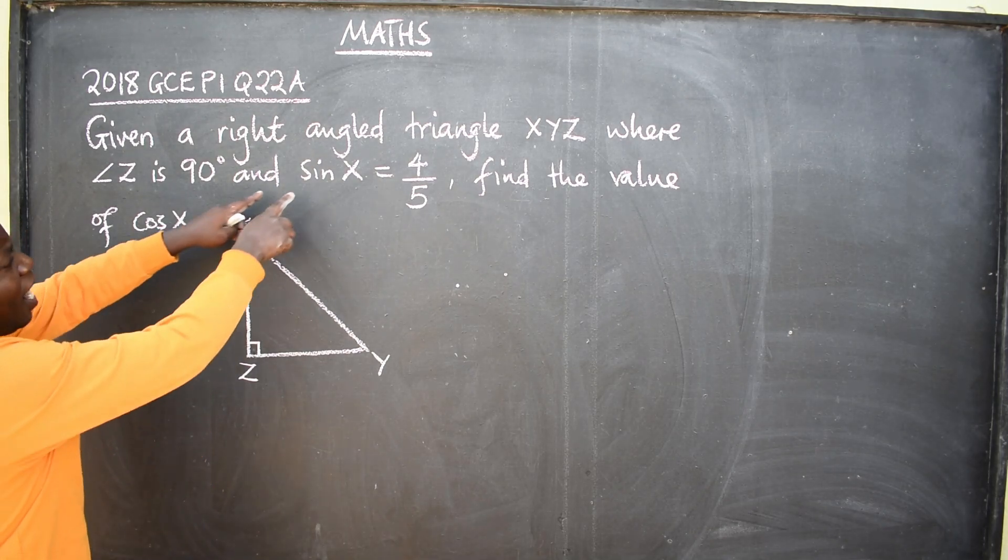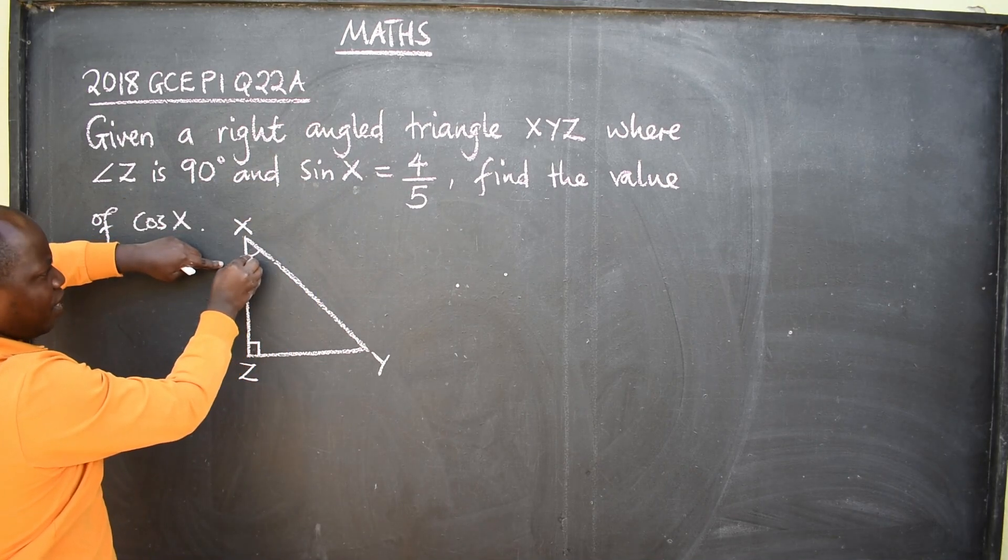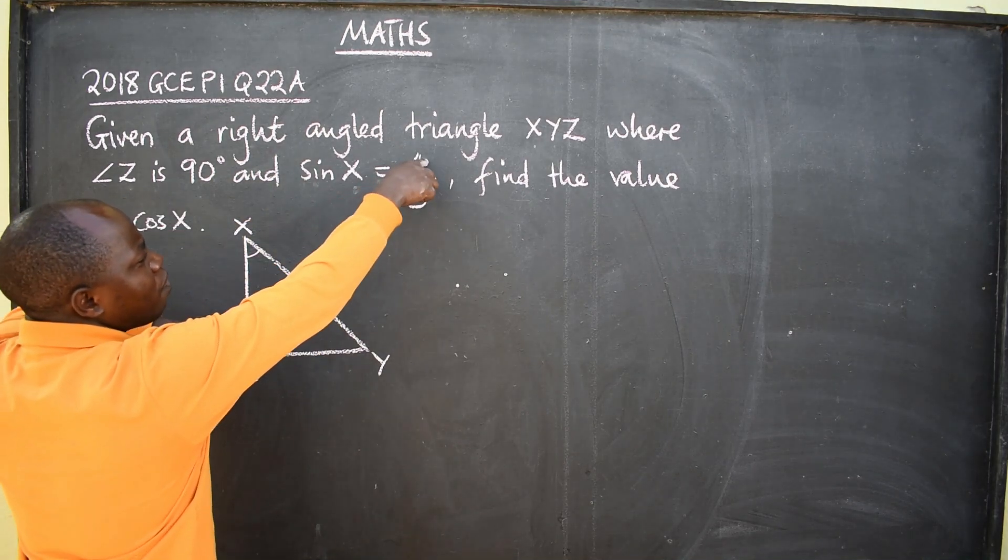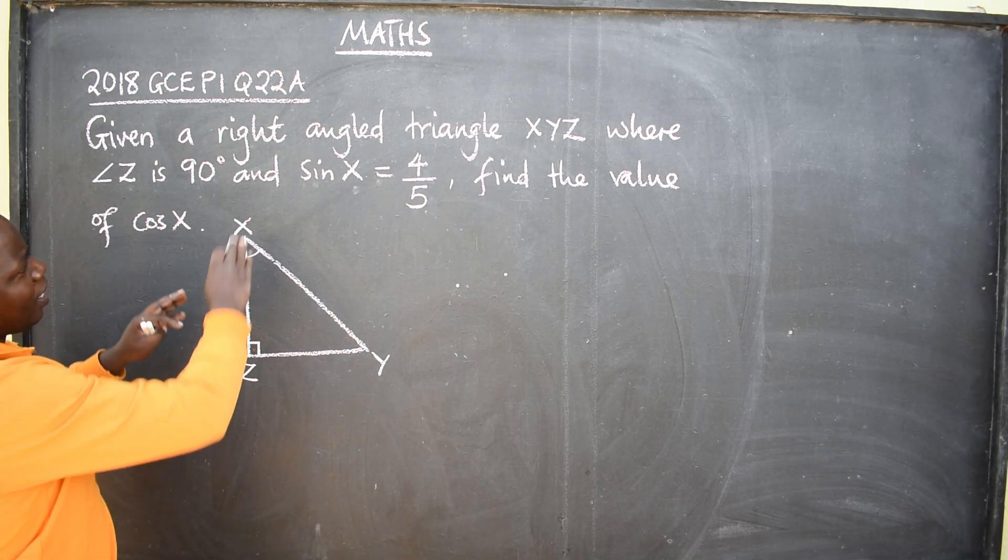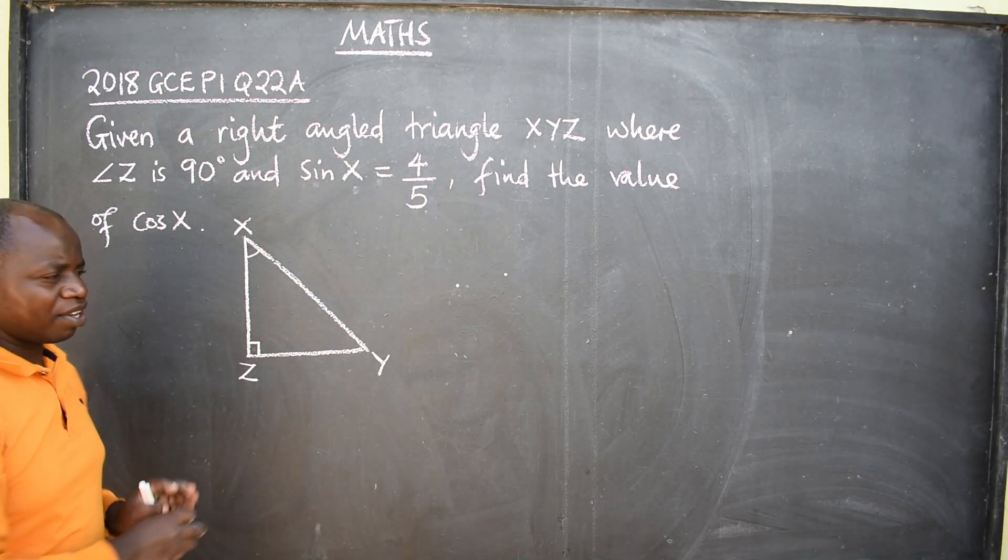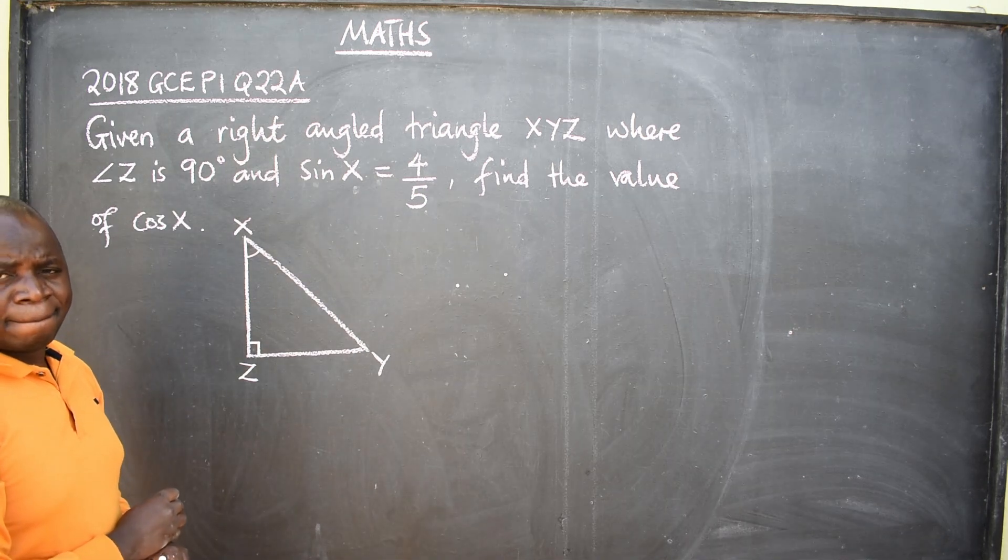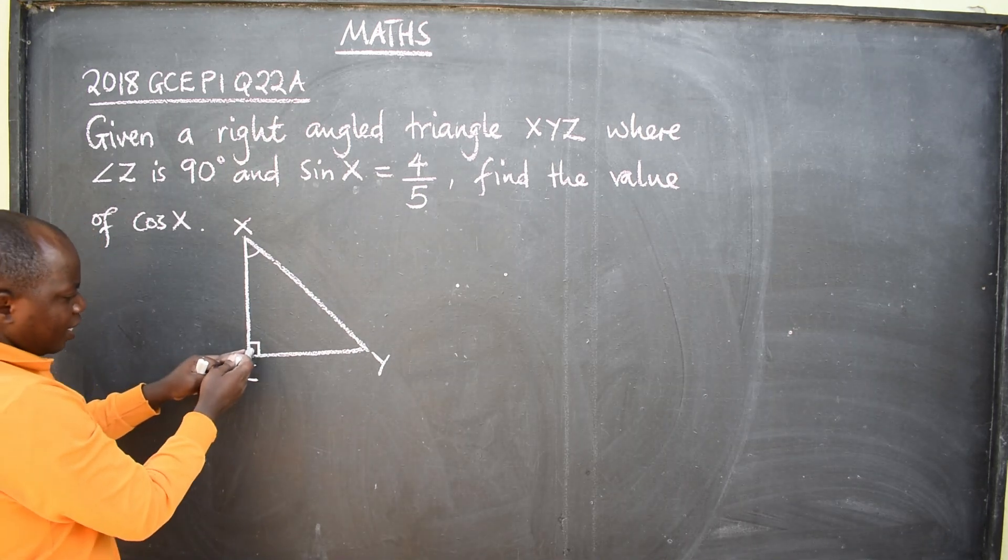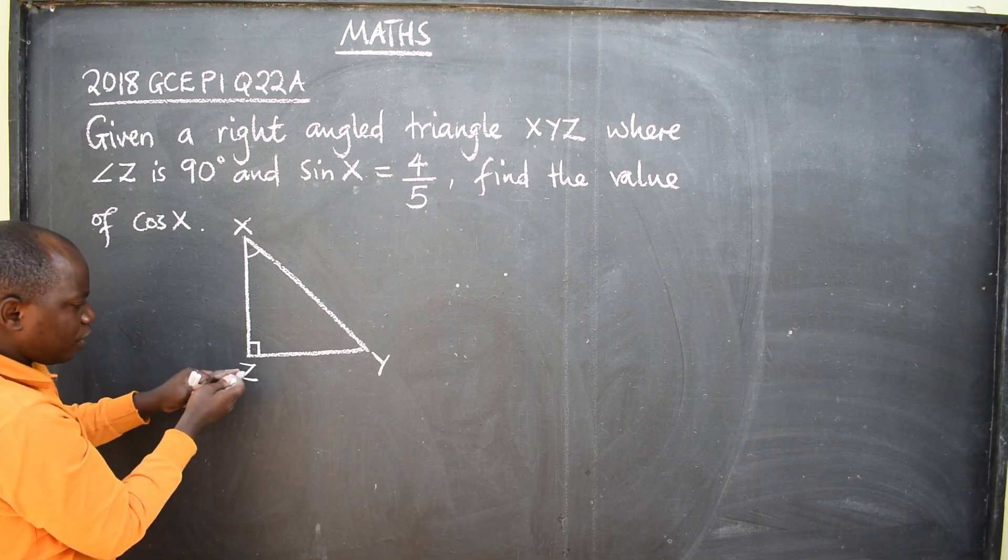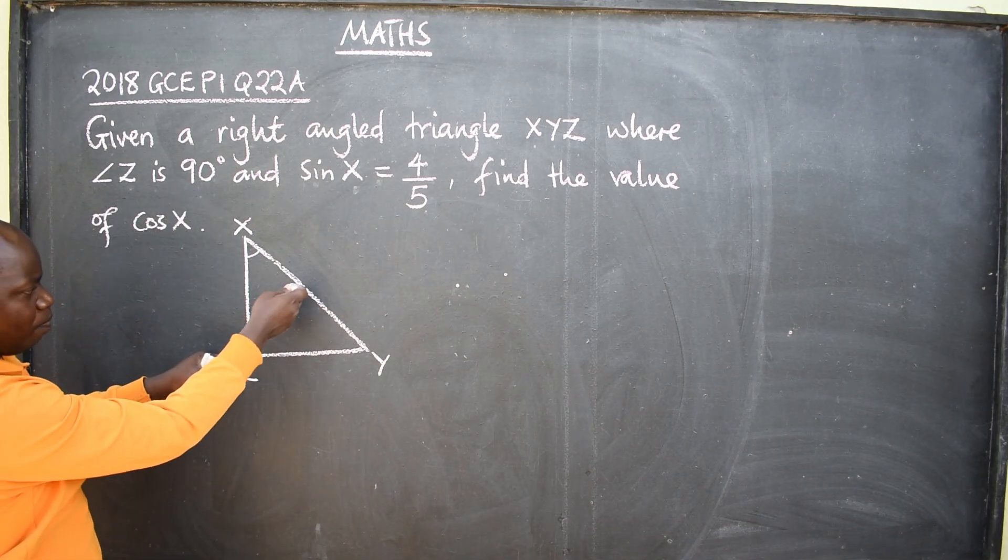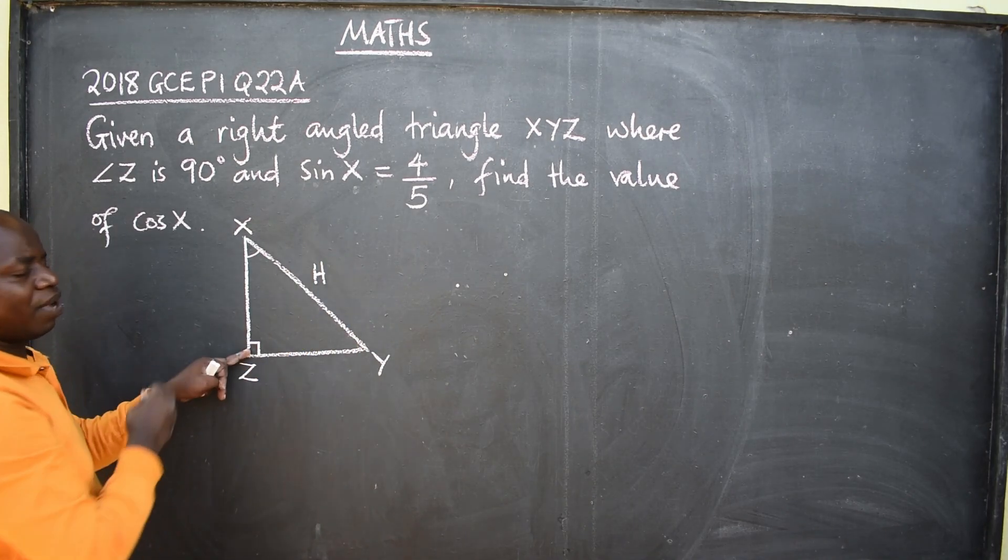They are saying sin x, this angle here, is equal to 4 over 5. That is the ratio. Now remember, in a right-angled triangle, the three sides have got names. The line, or the length, that is opposite to 90 degrees, meaning this one which is the longest, is the hypotenuse.